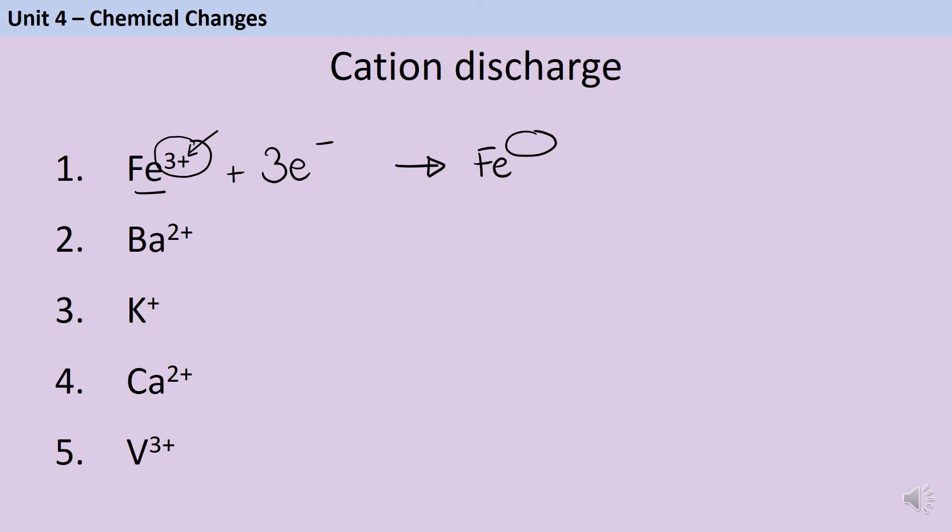Now this equation is balanced, and I can leave it alone. For barium, I'm going to do the same thing. I know that at the end of the day, I'm going to be left with a barium atom, which doesn't have any charge of its own. So the two positives that I see here need balancing out by adding two electrons. Hopefully that makes sense to you, and you can pause the video and do the last three on your own.